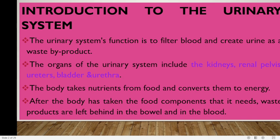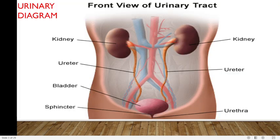The urinary system's function is to filter blood and create urine as a waste product. The organs of the urinary system include the kidneys, the renal pelvis, ureters, bladder and urethra. The body takes nutrients from food and converts them to energy. After the body has taken the food components that it needs, waste products are left behind in the bowel and in blood, so these wastes have to be removed.